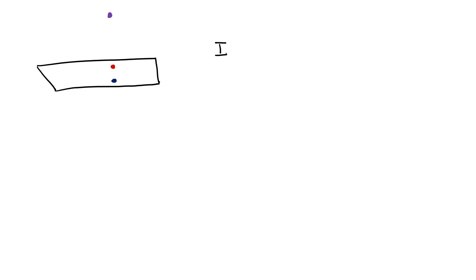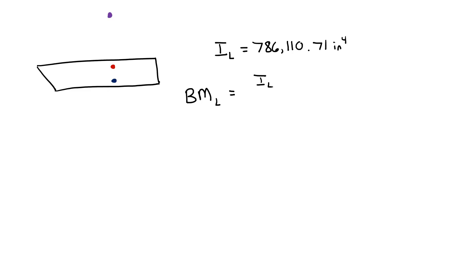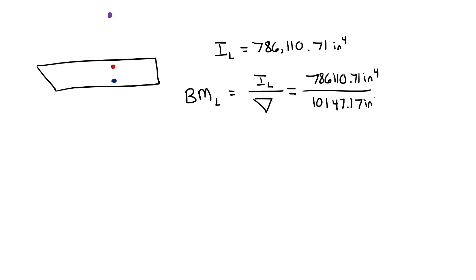I found from CAD my longitudinal moment of inertia to be 786,110.71 inches to the fourth, and therefore my metacentric radius is equal to my moment of inertia in the longitudinal direction divided by my displacement, again coming from my water plane areas. This gives me a metacentric radius of 77.47 inches.